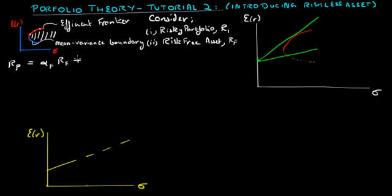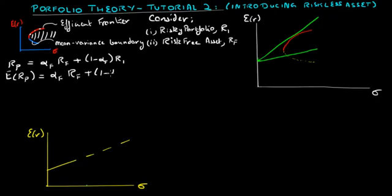RP equals alpha F times the risk-free rate, plus 1 minus alpha F times the return on the risky portfolio. We should note that RF, the risk-free rate, is assumed to be constant, so the expected return on this portfolio equals alpha F times RF plus 1 minus alpha F times the expected return on the risky portfolio.